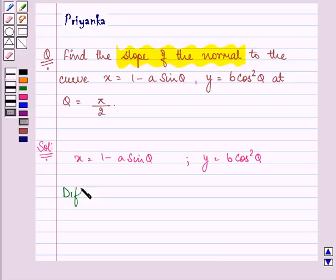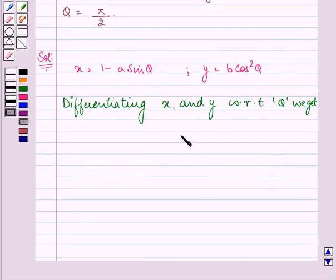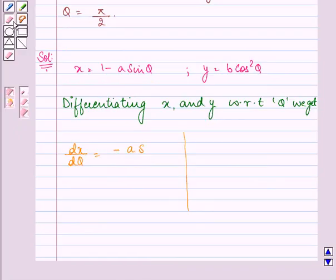Now differentiating x and y both with respect to theta we get dx by d theta is equal to minus a cos theta.